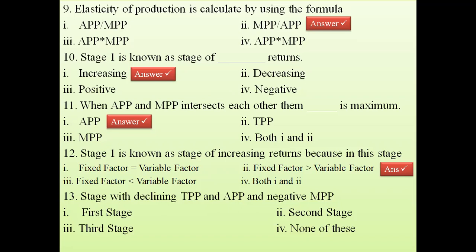Question 13: The stage with declining TPP, declining APP, and negative MPP. Negative MPP only occurs in the third stage, so we don't need to worry further — negative MPP means it will be the third stage.